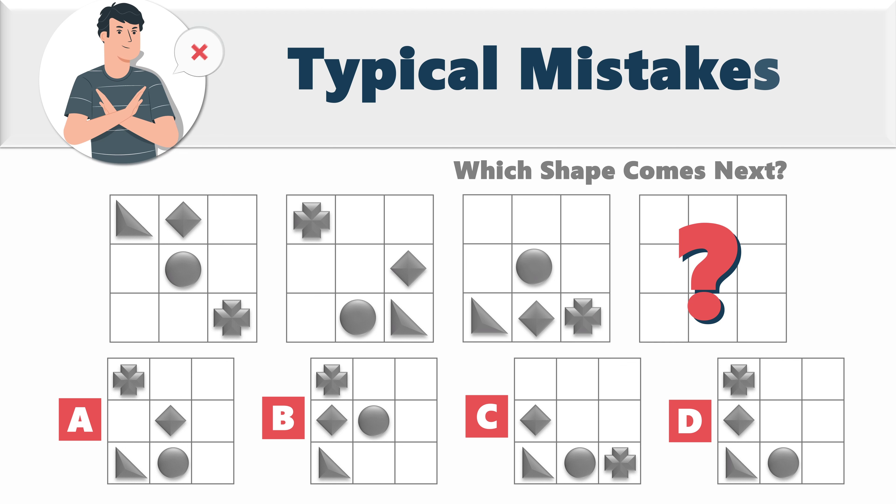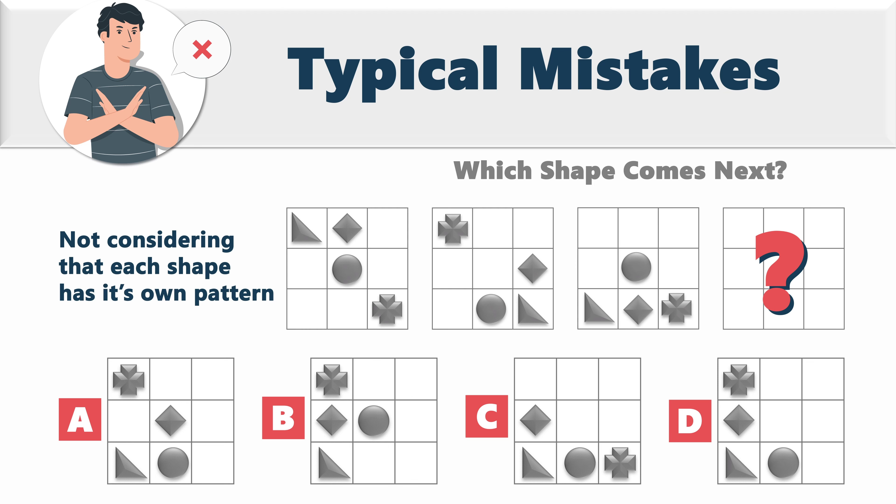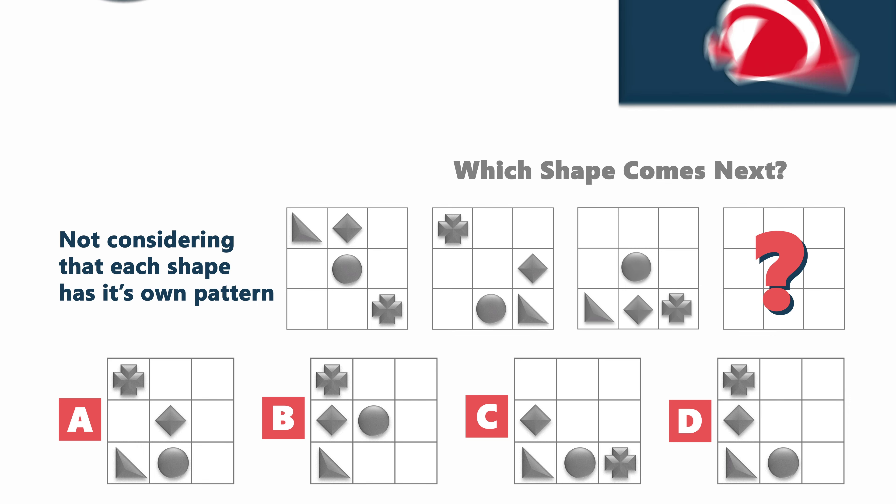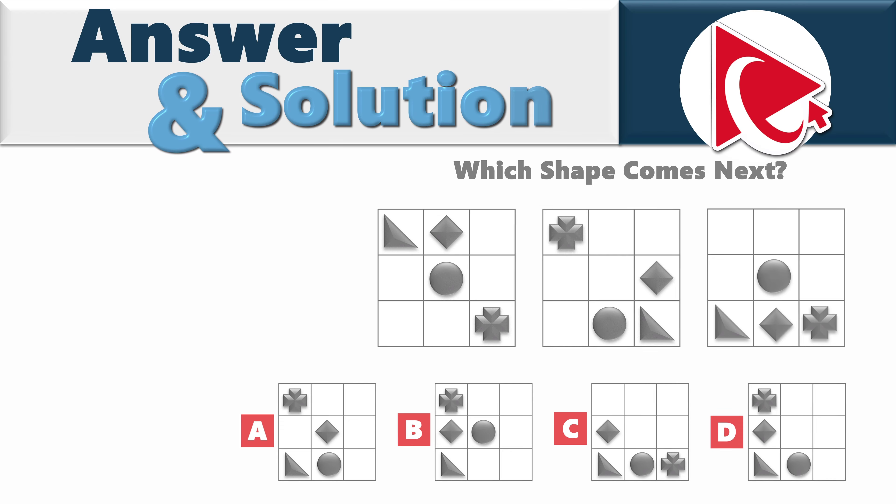Speaking about mistakes, you might be curious to learn that the most typical mistake in this particular question is not considering that each shape in the matrix has its own pattern. And this pattern is very simple. Let's look into details.